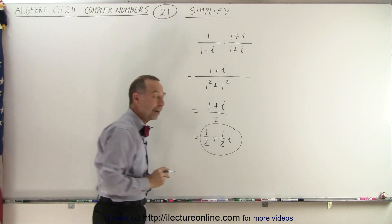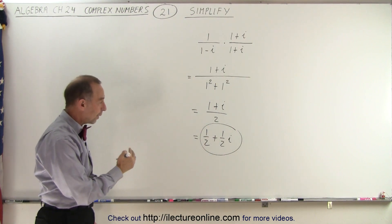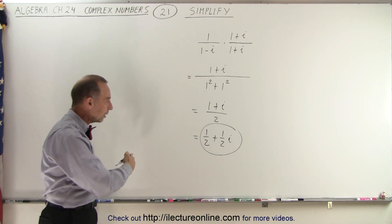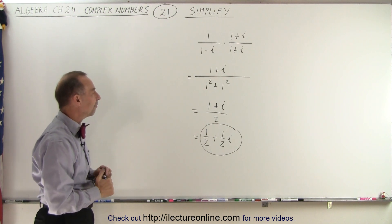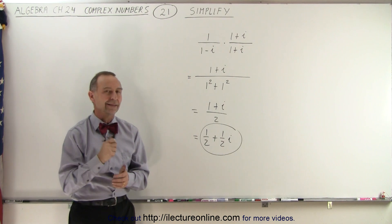Which is the proper way of writing the final answer, because you want to write it as a complex number with a real part and an imaginary part. So 1 over 1 minus i is the same as 1 half plus 1 half i. And that is how it's done.